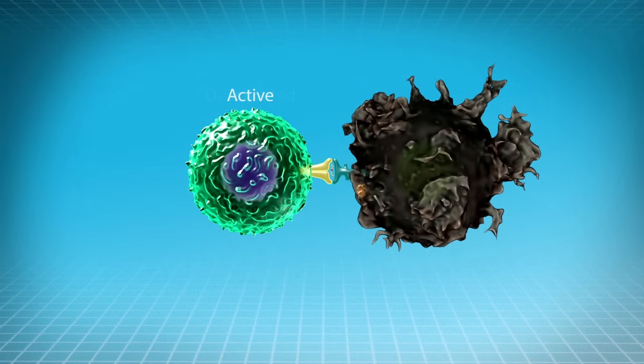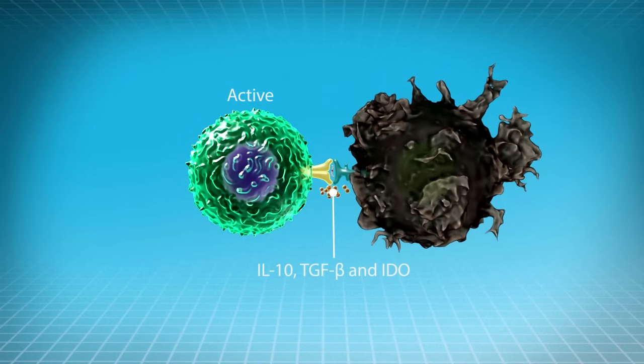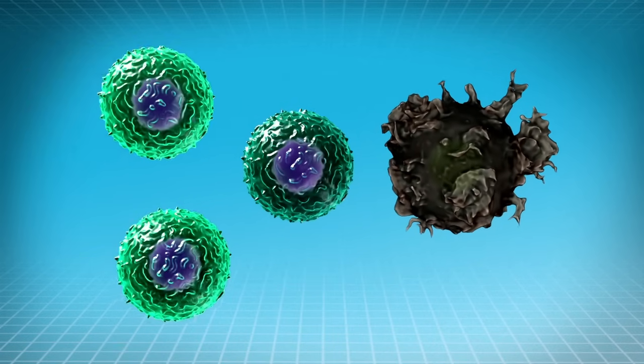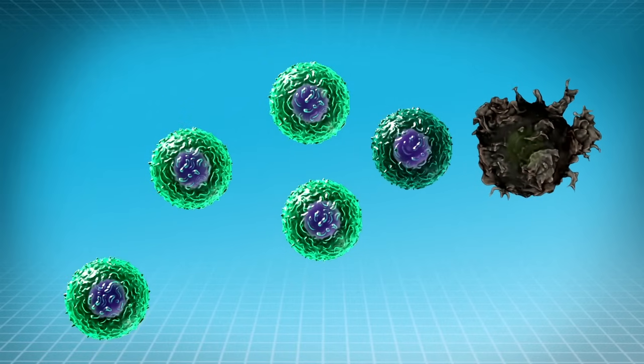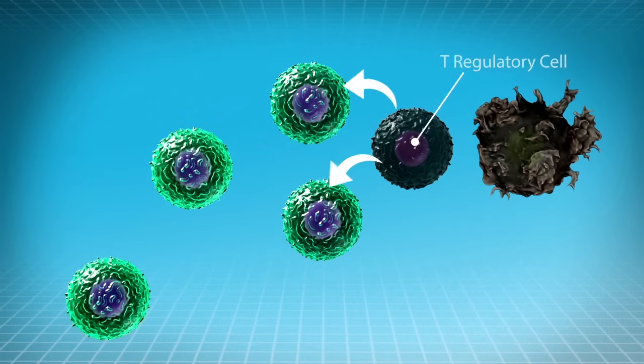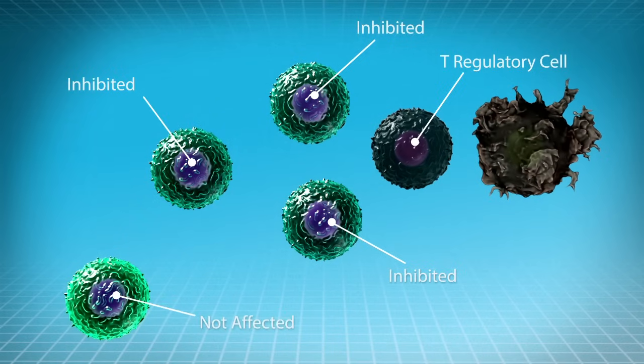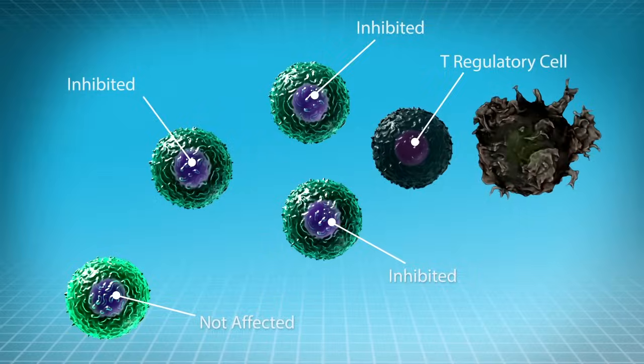The tumor can also secrete proteins, factors and cytokines that inhibit T cells from attacking and killing cancer cells, and can also turn the T cells into friends of the tumor. These cells can then deactivate other T cells. These traitor T cells are called T regulatory cells and are the enemy of the killer T cell army.